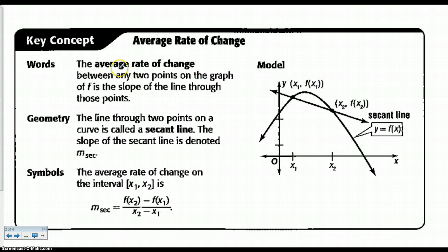So the average rate of change between any two points on the graph of f is the slope of the line through these two points. So what's happening is with these two points that we're given, we're finding the slope of that line.